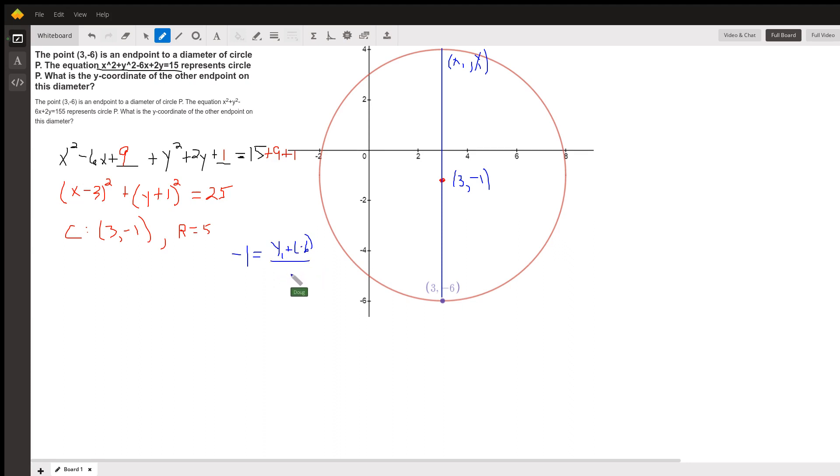That's the midpoint formula for the y-coordinate. Multiply both sides by 2. That equals y sub 1 minus 6. Add 6 to both sides, and we get y sub 1 equals 4.